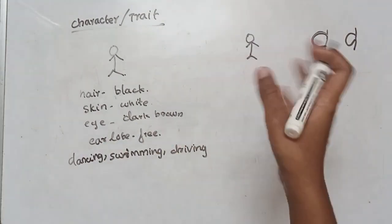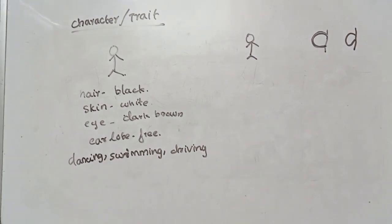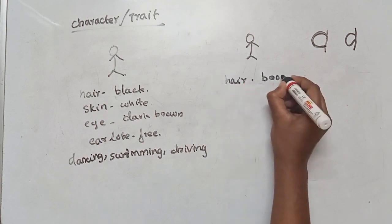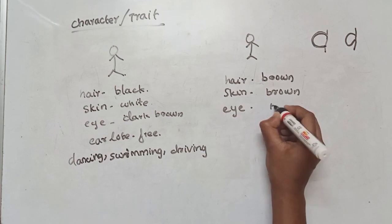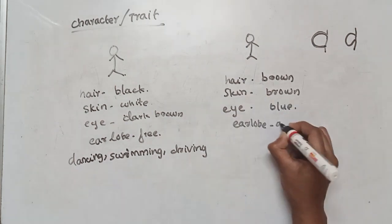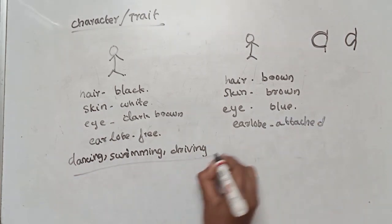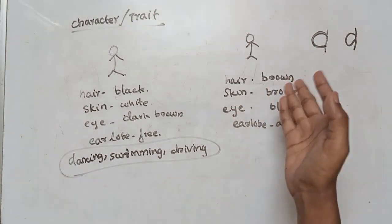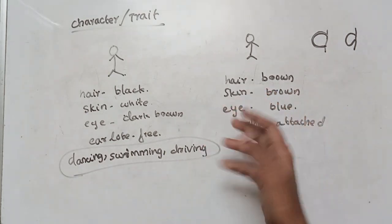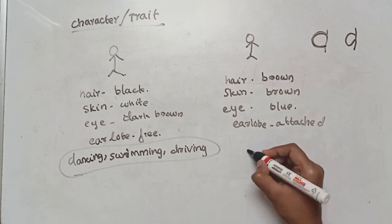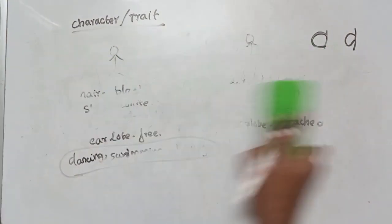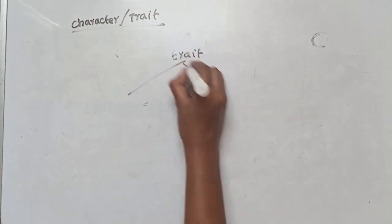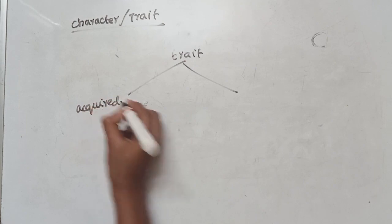But if I look at some things like dancing, swimming, or driving — those are things I will learn after birth. So, if I have brown hair, brown skin, blue eyes, and an attached ear lobe — but I don't know dancing, swimming, or driving, those are not the same type of characters. We have two types of characters.